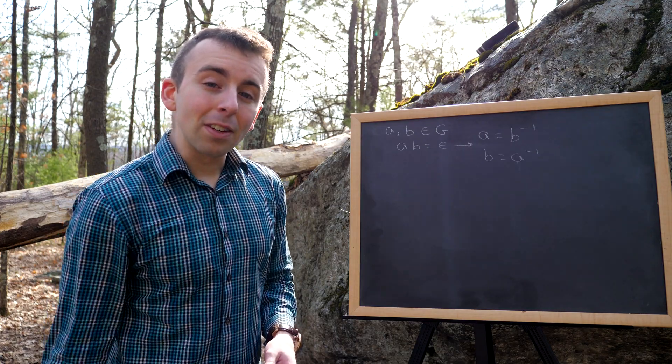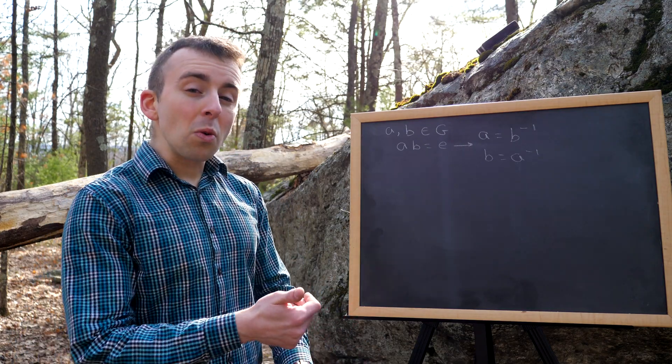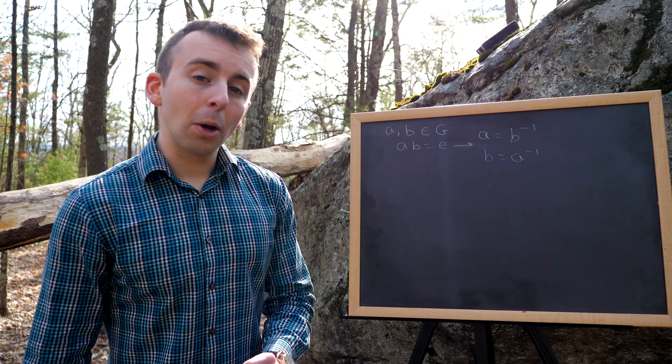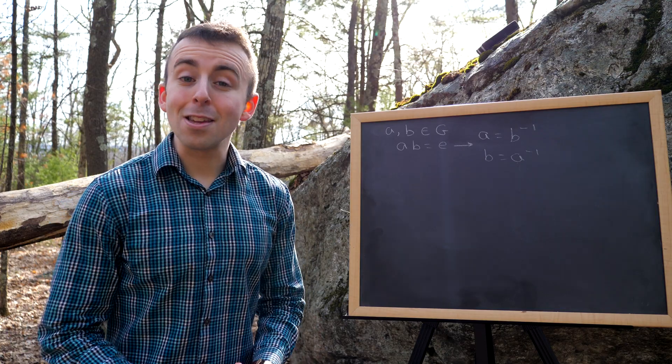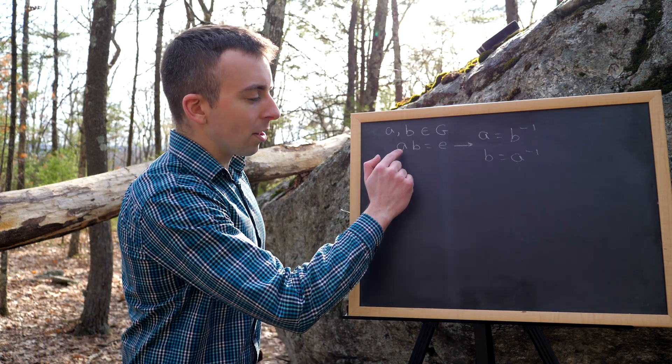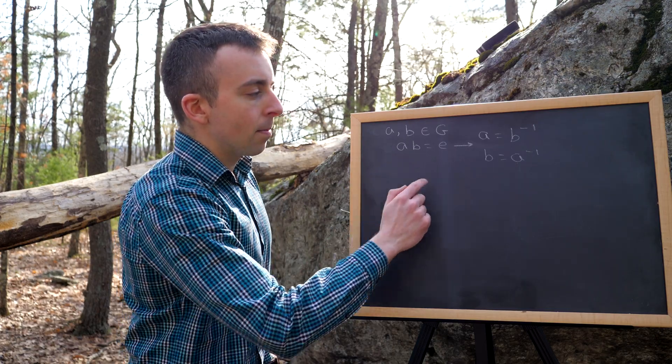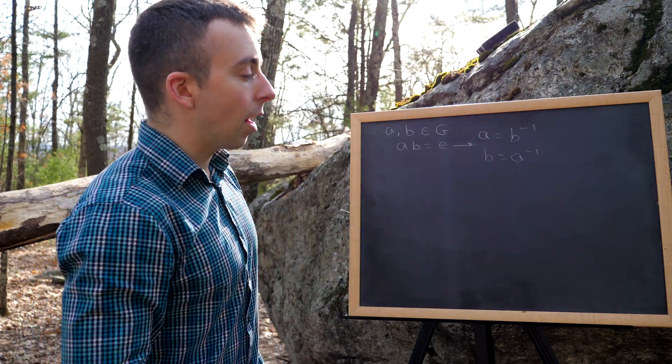It's a pretty straightforward result. Definitely give it a try yourself. I'll actually show you a few ways that we could go about this proof. First, let's see the most obvious one. We want to prove that if AB equals E, then A and B are inverses of each other.